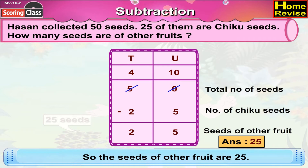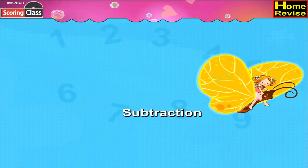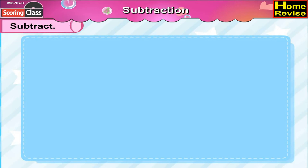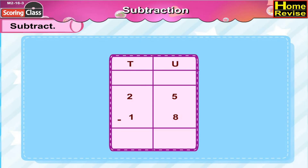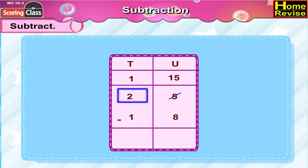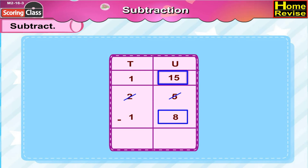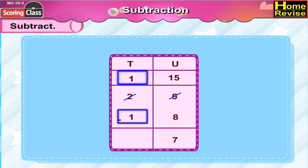25 minus 18 — that is 2 tenths 5 units minus 1 ten 8 units. Since 8 cannot be subtracted from 5, we untie 1 ten from the 2 tenths, so 5 units becomes 15 units: 1 ten 15 units. 15 minus 8 is 7, and 1 minus 1 is 0, so 25 minus 18 is 7.